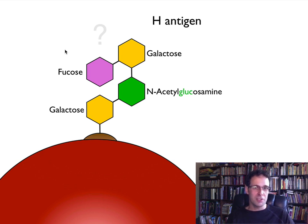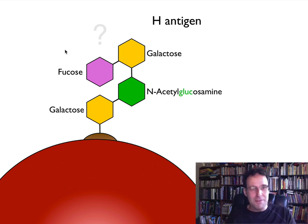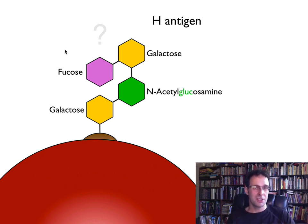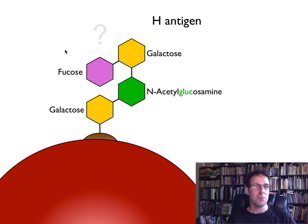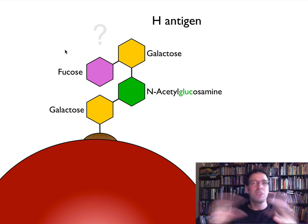Three of those are the simple sugars galactose and fucose. And then there's also this amino sugar called N-acetylglucosamine. Now, almost everybody has the H-antigen on the surface of their red blood cells. There is a rare exception called Bombay syndrome, but practically everybody has the H-antigen all over the surface of their red blood cells.